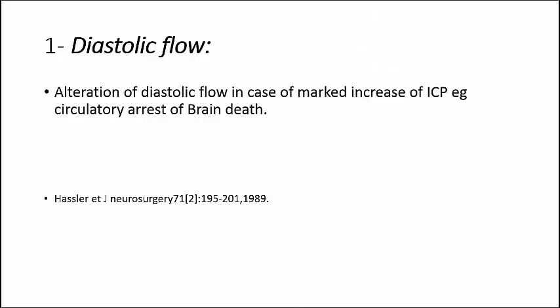After performing the transcranial Doppler study, what are you looking for? Number one: look at the diastolic flow first. When you get the TCD of any cranial vessel, the first thing you need to look for is alteration of the diastolic flow. If you find loss of diastolic flow or reversal of flow, you will think about markedly increased intracranial pressure or circulatory arrest of the brain.